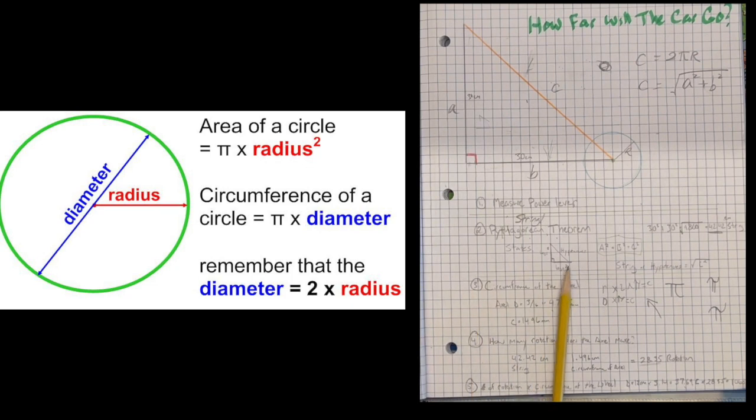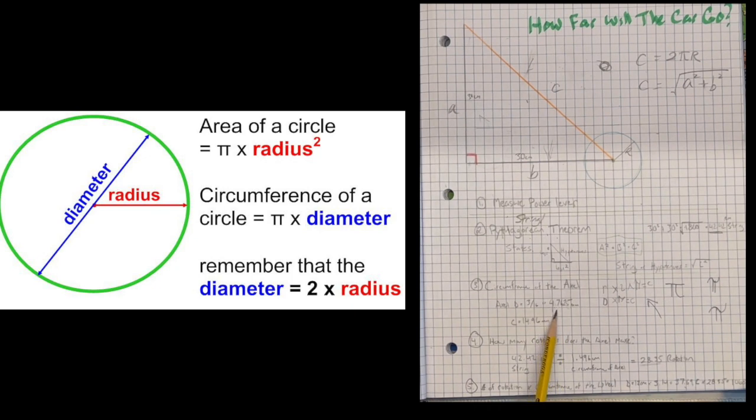Now we're on number three, the circumference of the axle of our car. How far will the car go is what we're trying to find. The axle diameter is three-sixteenths of an inch, or 4.7625 millimeters. The circumference is 14.96 millimeters.